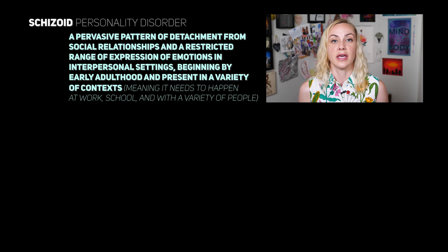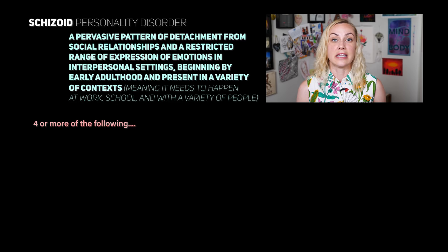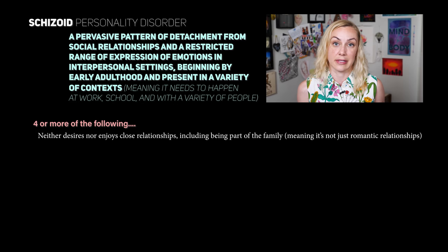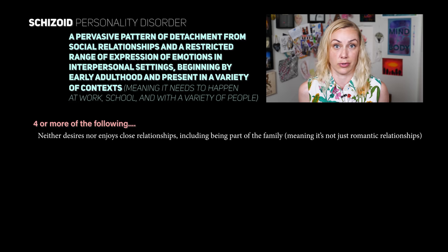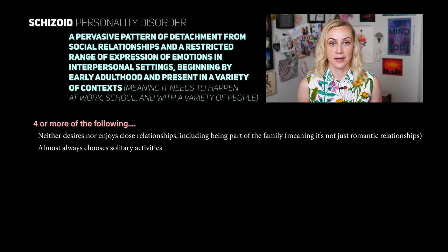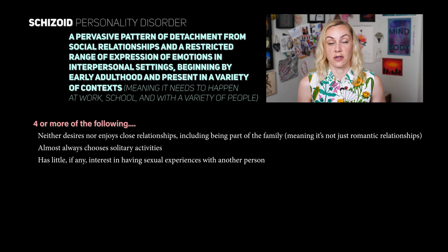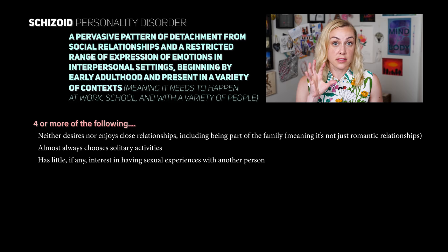Number one: neither desires nor enjoys close relationships, including being part of a family — meaning it's not just romantic relationships, they just don't enjoy any kind of relationship with anybody. Number two: almost always chooses solitary activities. Number three: has little, if any, interest in having sexual experiences with another person. This is not to be confused with asexuality or aromantic people — this is specific to Schizoid Personality Disorder.